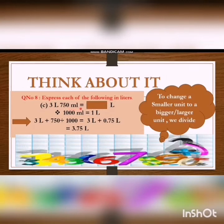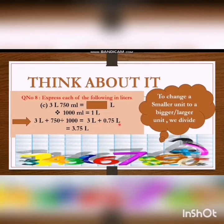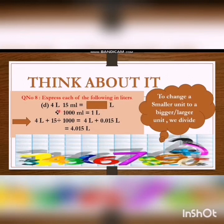Part C: 3 liters 750 ml. We convert into whole liters. We know 1000 ml is equal to 1 liter. We separate 3 liters and divide 750 by 1000 to get 0.75 liters. Adding the two parts: 3 + 0.75 = 3.75 liters. Part D: 4 liters and 15 ml. We divide 15 by 1000 and add 4 liters to get 4.015 liters.